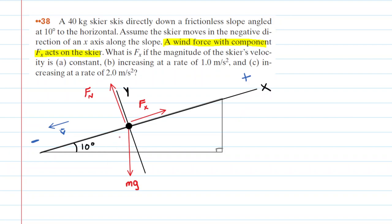We know that the skier is traveling down the slope in the negative direction of the x-axis, so we've labeled the velocity vector pointing in the negative x-direction. After drawing these three forces, the next thing we need to do is figure out the angles associated with these forces. We want to figure out this angle here, which we'll call theta — it will be an important angle in solving this question.